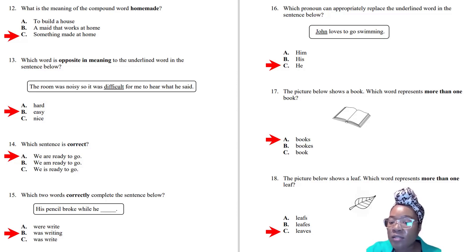Question sixteen: Which pronoun can appropriately replace the underlined word in the sentence below? We're going to replace the proper noun John with the pronoun he. Sound it out: 'him loves to go swimming,' 'his loves to go swimming,' 'he loves to go swimming.' That will activate your memory and help you remember the correct answer.